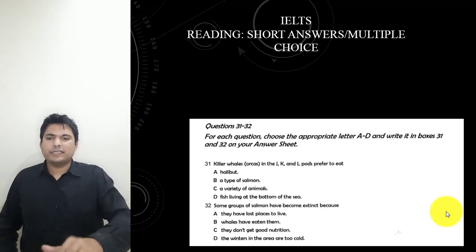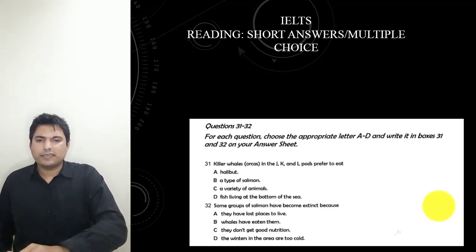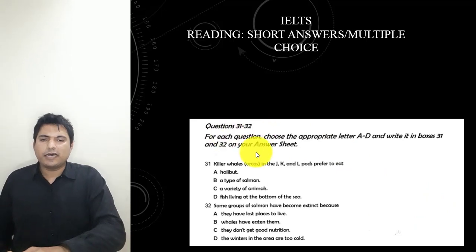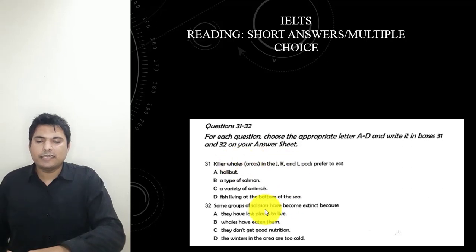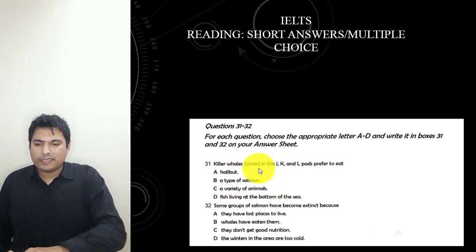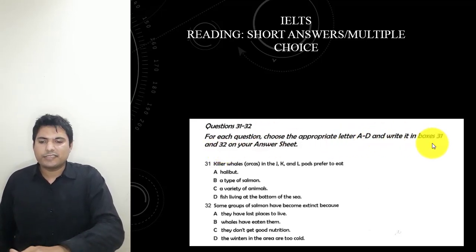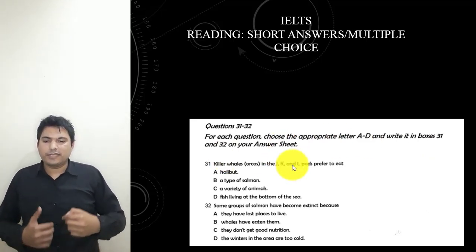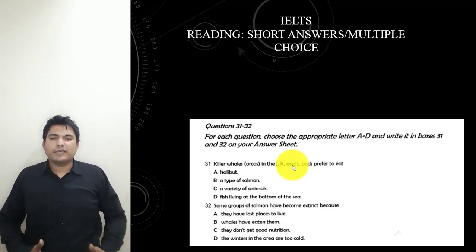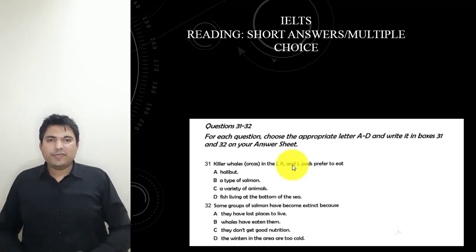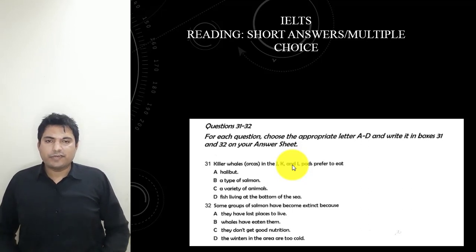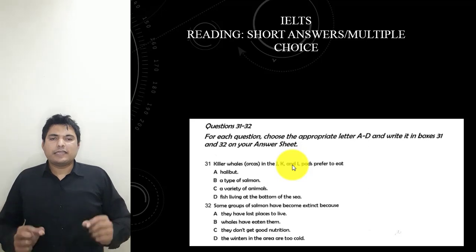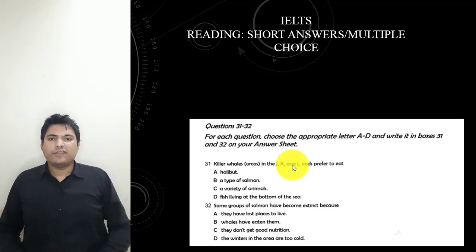Now let's go towards the video, which is IELTS short answer and multiple choice questions. In this type of question, you might get a question and the answer will be in the form of options — you may have to select an option from the choices given. In some cases, you might have to write the answer in words, and it will be mentioned that the answer should be no more than two or three words. I have combined these two question types because the tips and tricks for solving them are the same. We will study the tips and tricks first, then solve examples to clarify how to approach these questions.